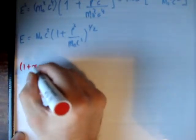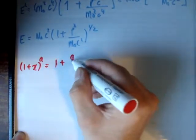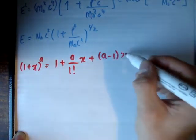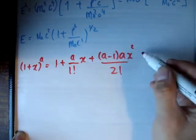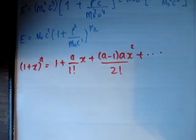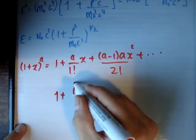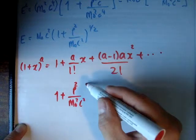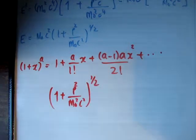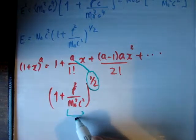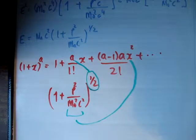The next thing we need is to apply another expansion. The expansion of 1 plus x to the power a is equal to 1 plus a over 1 factorial times x plus a minus 1 times ax squared over 2 factorial plus dot dot dot. Applying this to what we have — 1 plus p squared over m₀ squared c squared to the half — in this case a equals one half and x equals p squared over m₀ squared c squared.